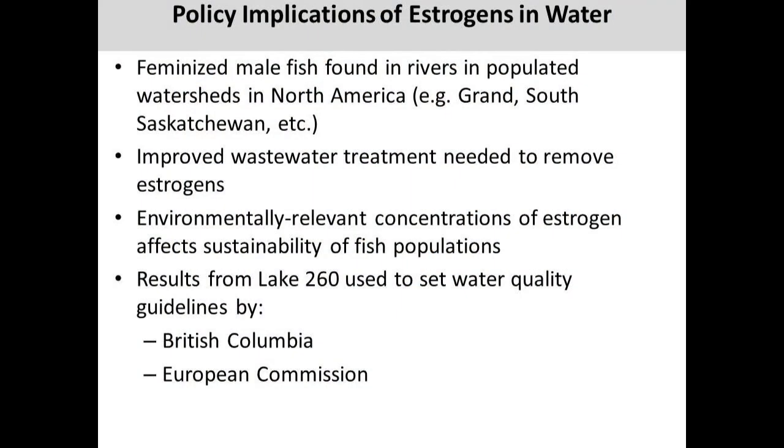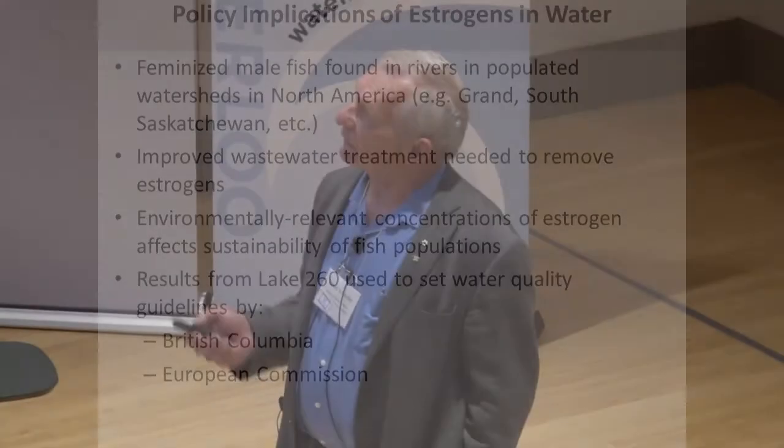Areas with high population densities are a possible concern. So far, that experiment has resulted in water quality guidelines in British Columbia and the EU. But we desperately need more work with other species of fish and other ecosystems. There are huge policy implications — without precise dosing controls as in that experiment, feminized male fish have been found in several places in North America, the UK, and other parts of Europe. Work is already going on to improve wastewater treatment in some areas to reduce those compounds.